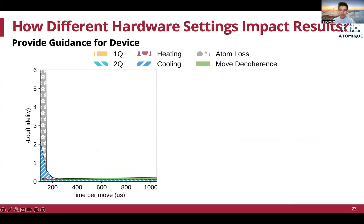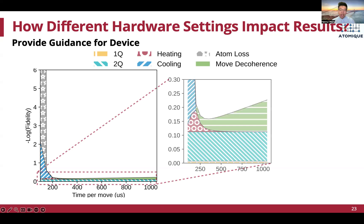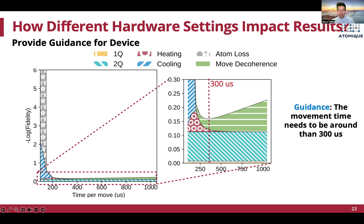We also study the sources of errors under different hardware settings. An important hardware setting is the time per movement, which inversely correlates to movement speed. Different colors indicate contributions of infidelity from different sources—larger area means larger infidelity. When time per move is very small, indicating very fast atom speed, atom loss error dominates because atom vibration is very strong under fast movement. When speed is high, heating and cooling infidelity is very large. As time per move increases, heating overhead reduces but overall runtime increases, bringing larger decoherence errors. This interesting trade-off leads to a sweet spot of around 300 microseconds per move, which also aligns with real device experiment settings in Harvard-Lukin's group.